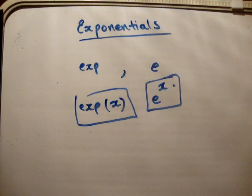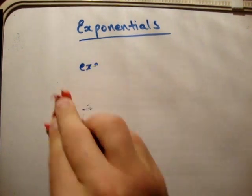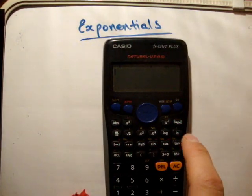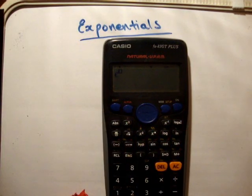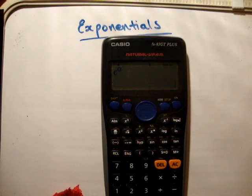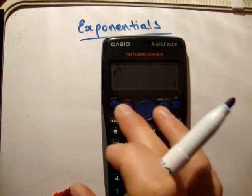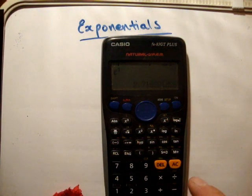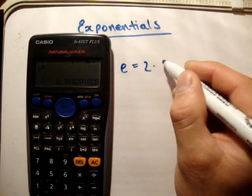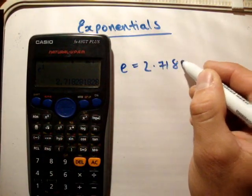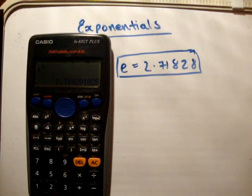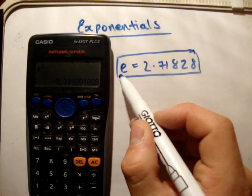I suppose the first question is, what is e? I'm going to answer this by opening up my calculator, pressing shift, pressing the natural log button which gives me e, giving it a power of 1. And I guess that e is equal to 2.71828. It's just a number. That's all that the exponential is.